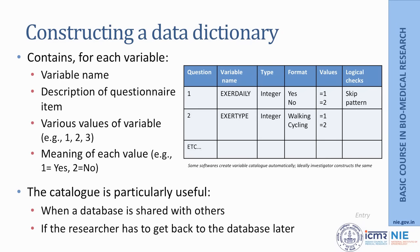When it comes to data entry, you need what is called a catalogue. Before data entry is made, you create what is called a data dictionary or variable catalogue, in which you describe each variable, which questionnaire item it refers to, what values will be assigned, and the meaning of each value in a particular format. Some software generates a data dictionary on its own, but it is preferable that you develop your own, referring to the question item, the variable name, the type of variable, the format in which data is collected, the values assigned, and any logical checks.